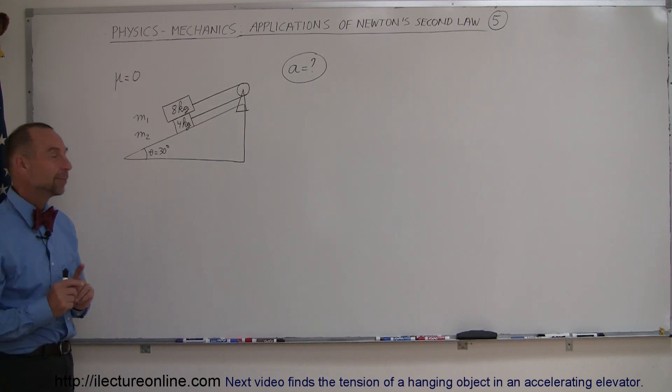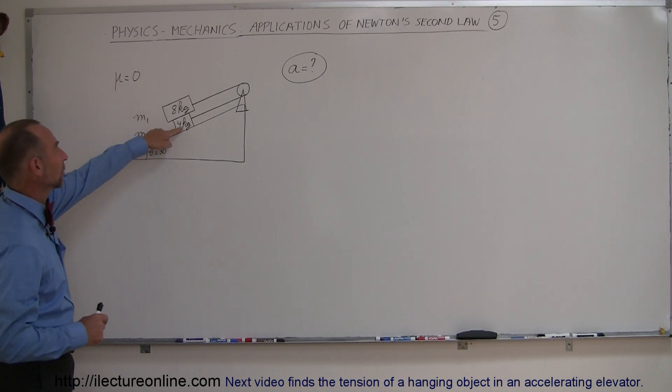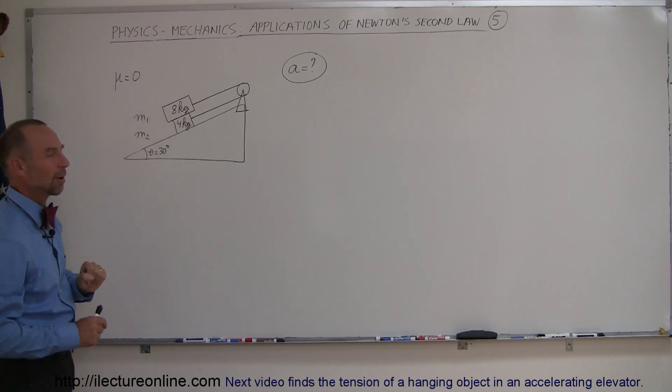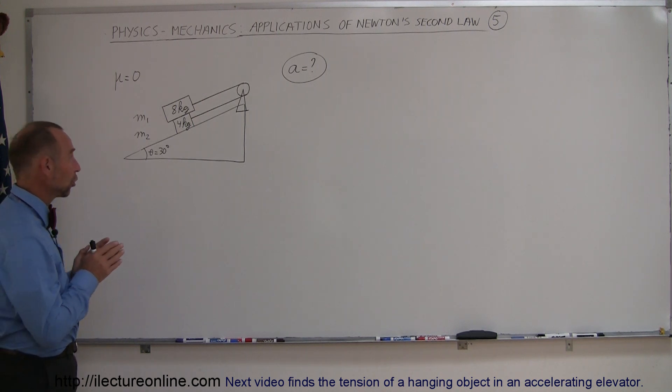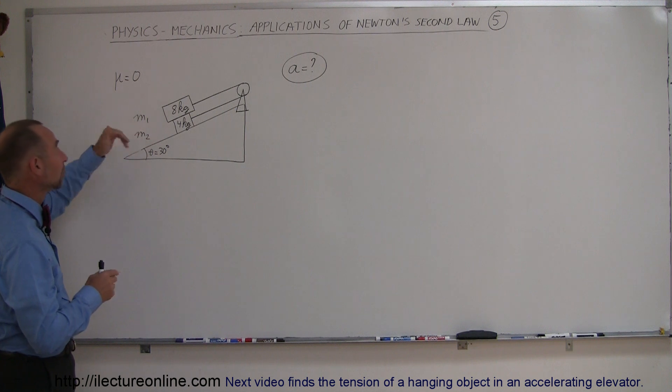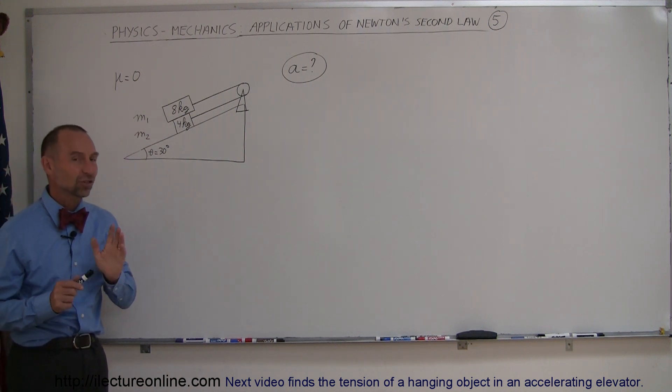But realizing that there's no friction between the 4 kilogram mass and the incline and there's no friction between the 8 kilogram mass and the 4 kilogram mass, it's really not that difficult of a problem. You'll see that it's very similar to what we've done before. Now in a later example I will show you how to do this when there is friction between the masses and then of course things change a little bit.